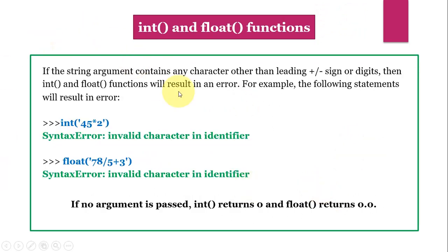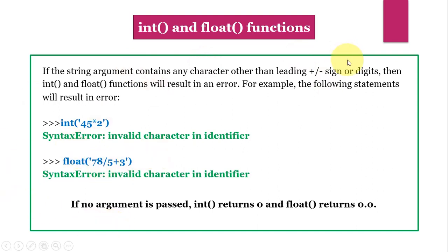If the string argument contains any character other than a leading plus or minus sign or digits, int() and float() will result in an error. For example, int('45*2') gives an error because the star symbol is not allowed. Similarly, float('78/5+3') is invalid because slash and plus are not permitted. If no argument is passed, int() returns 0 and float() returns 0.0.